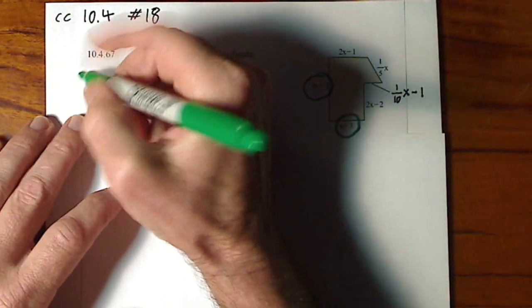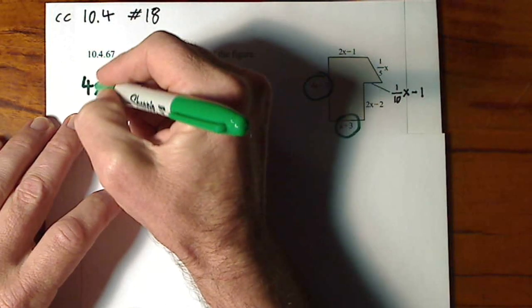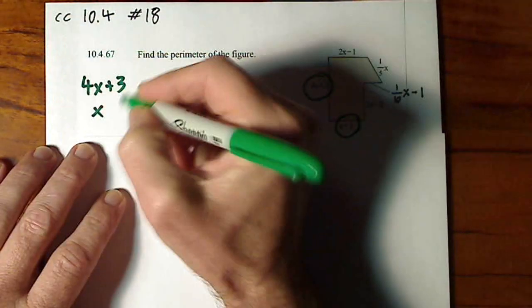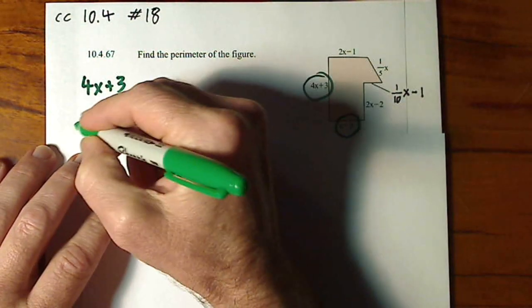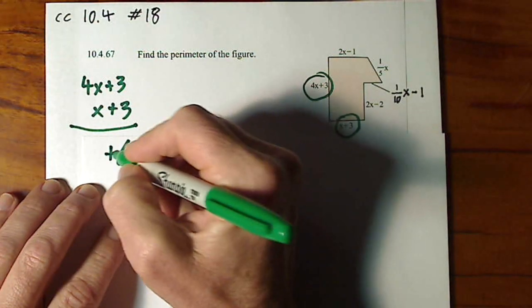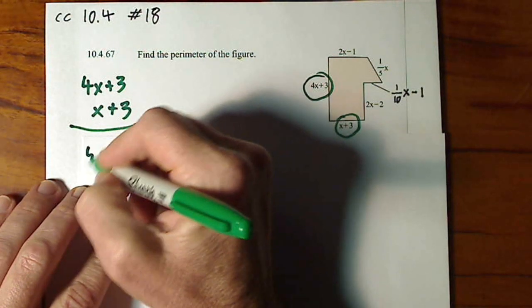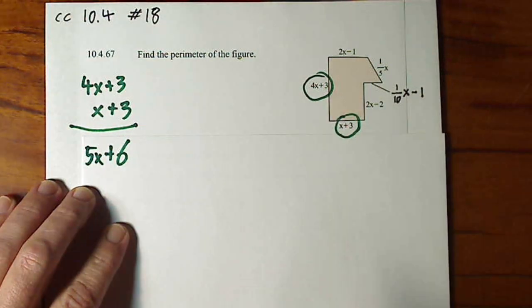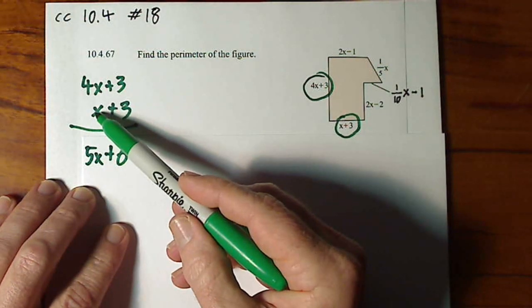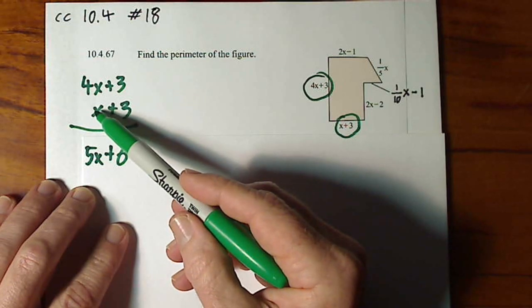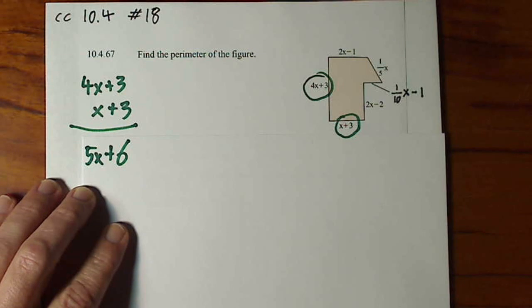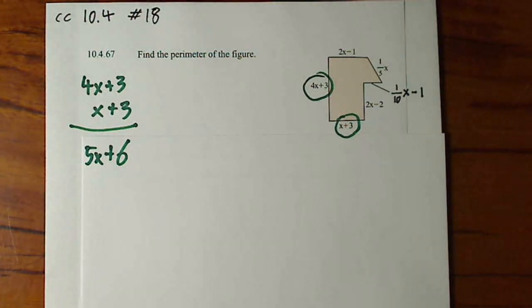We have 4x plus 3 and x plus 3. When we combine those we have 5x plus 6. Remember there's always a 1 in front of the variable or we say there's a coefficient of 1. So that's dealing with those two sides.